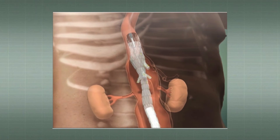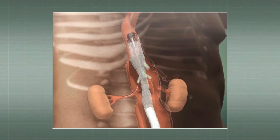After that, each of the stent graft branches is catheterized and the 9 French sheath is inserted, followed by catheterization of the visceral artery. We then deploy the bridging stent.